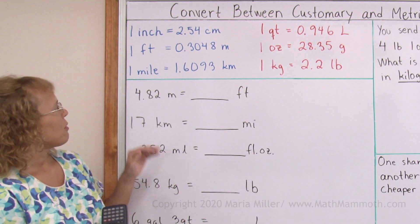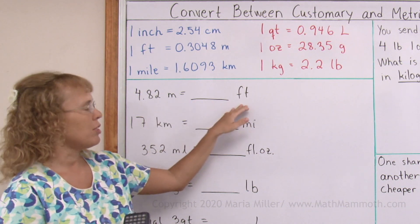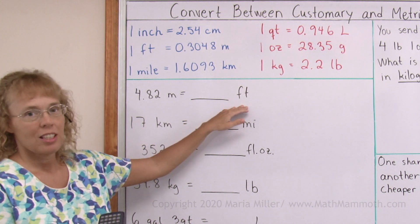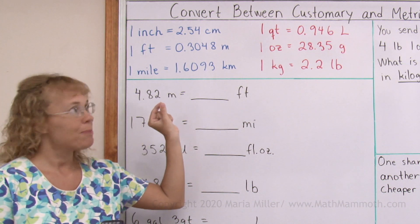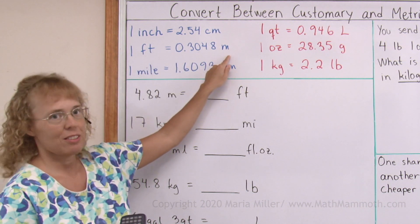And my first problem has 4.82 meters into feet. Now let's check, first of all, our conversion factors. Do we have one between meters and feet? Yes, we do. It's one foot equals so many meters.